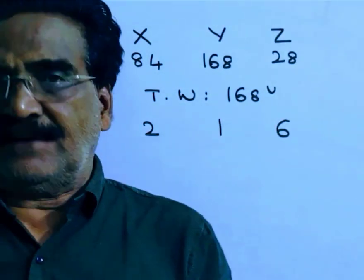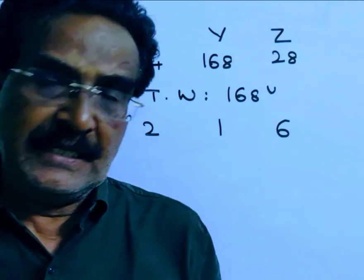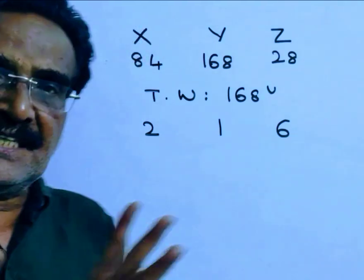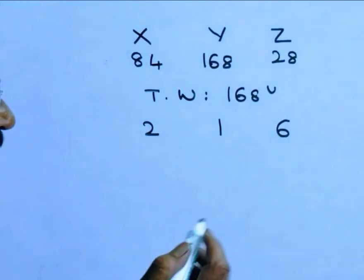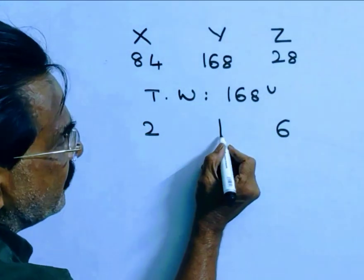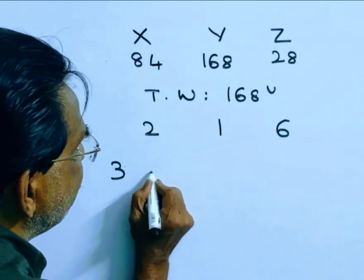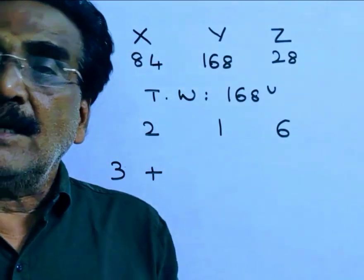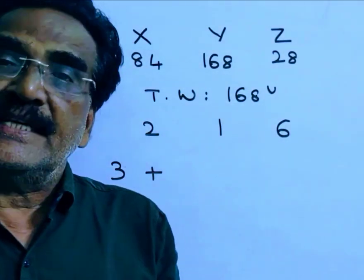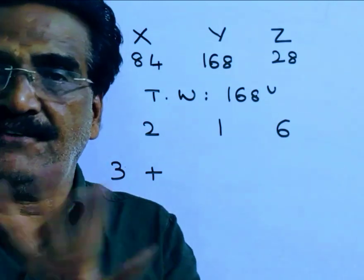Now Y started the work. Y started the work and after 3 days X joined. So that means the first 3 days Y worked. In the first 3 days the work done by Y is 3 times 1, 3 units. The first 3 days Y completed 3 units of work. And after that X joined. X and Y worked for 4 days.